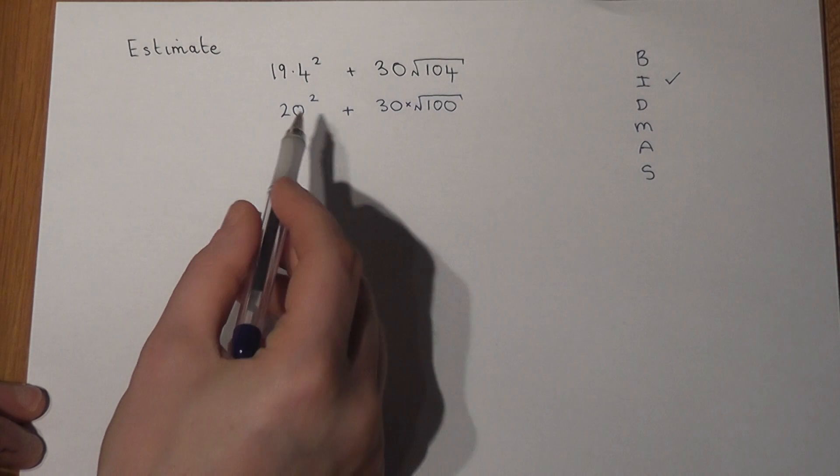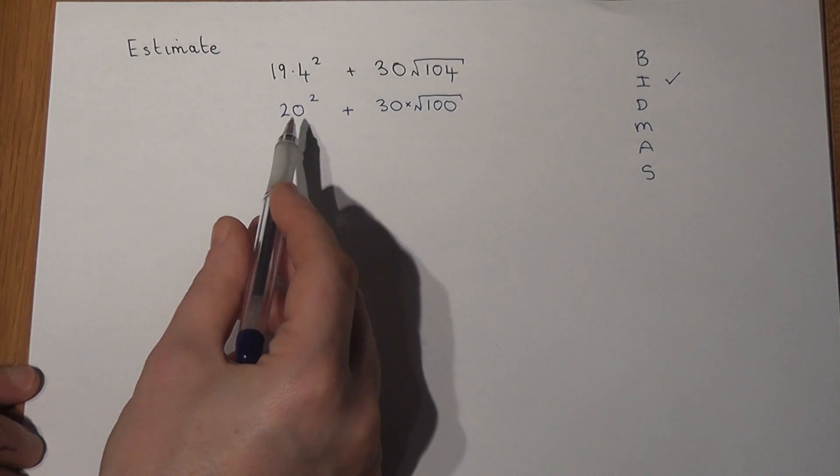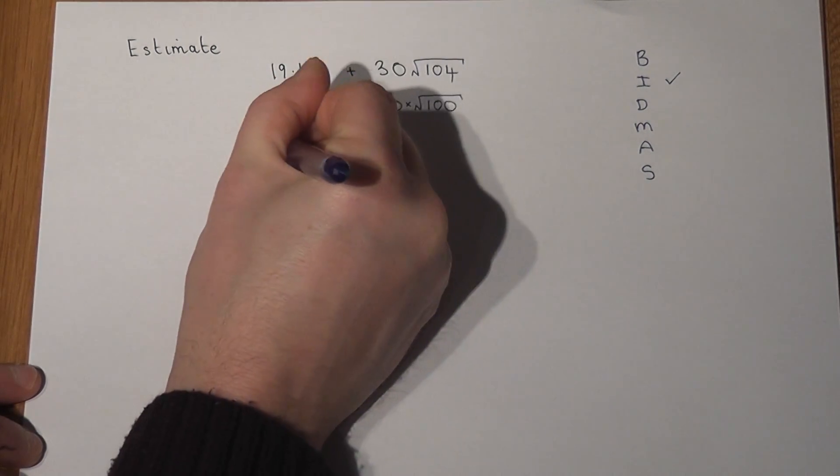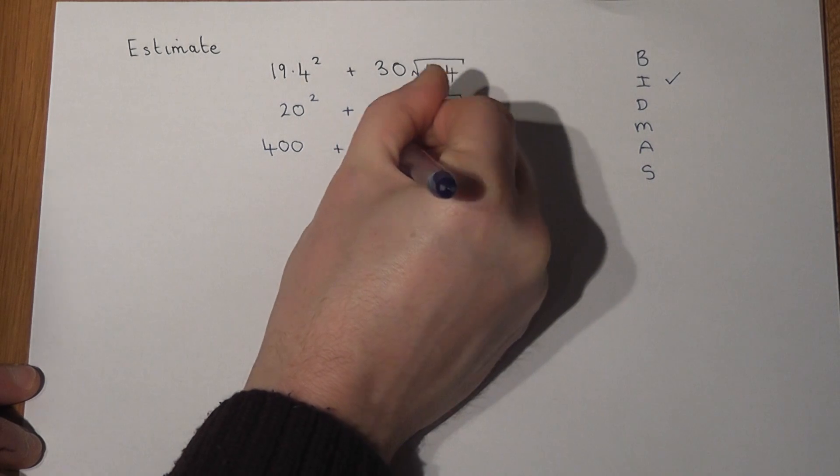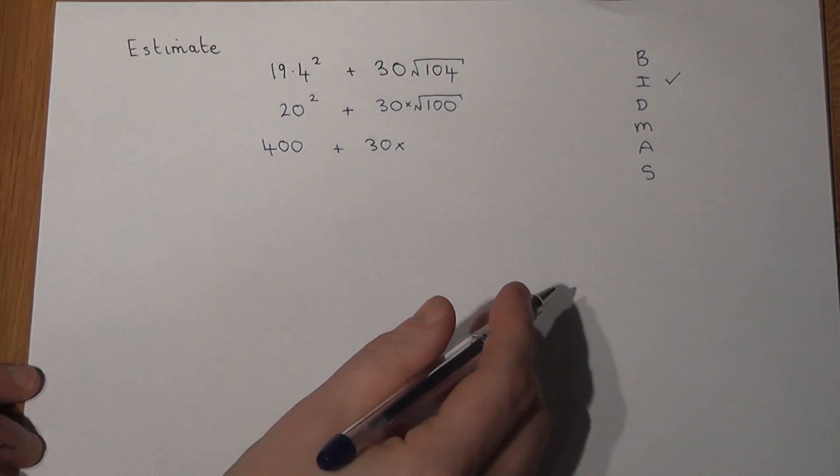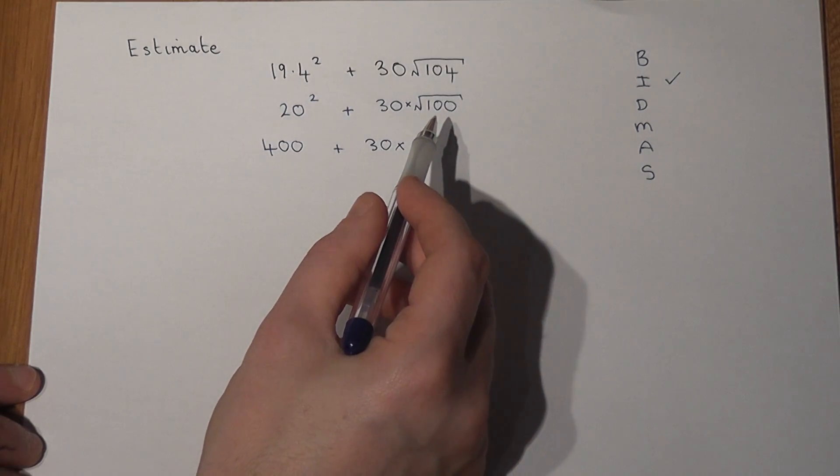Now 20 squared just means 20 lots of 20. Now 20 times 20 just equals 400. There's a 30 there and square root is the opposite of squaring. Well what number squares to make 100? Well 10 times 10 is 100, so the square root of 100 just equals 10.